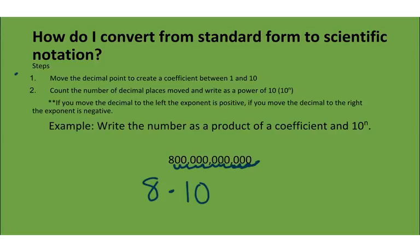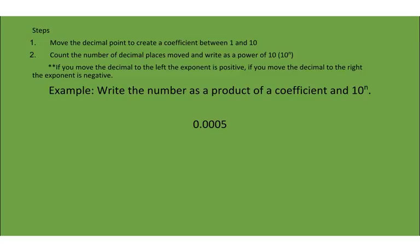Don't worry, you'll practice. So what do I do when I have a really small number and I need to change it into scientific notation? The exact same thing. So the first thing I do is I move the decimal point to create a coefficient between 1 and 10. So I'm going to move this decimal point all the way over here.